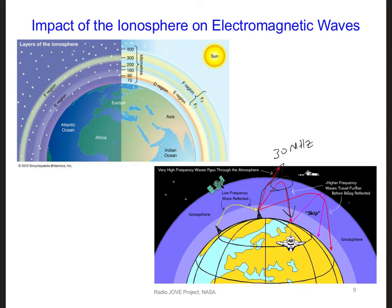At frequencies below but near 30 megahertz, the electromagnetic waves are reflected by the upper part of the ionosphere, meaning they propagate through a large part of the ionosphere first before they reflect.